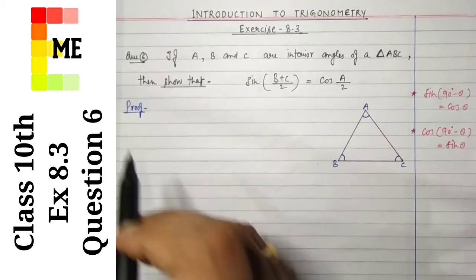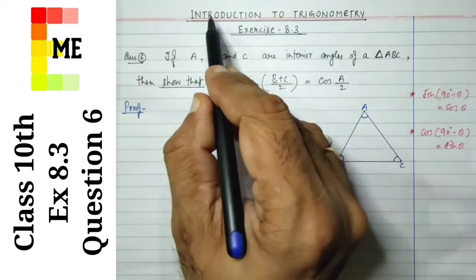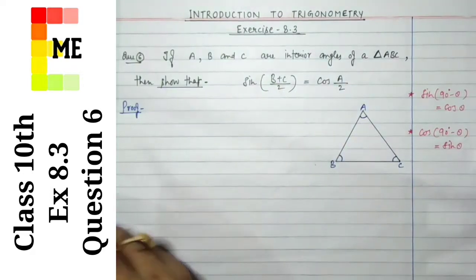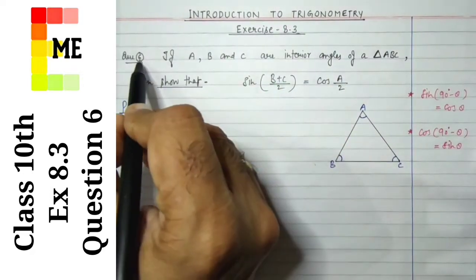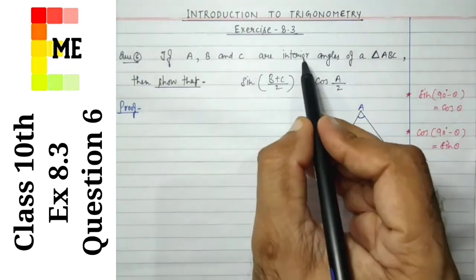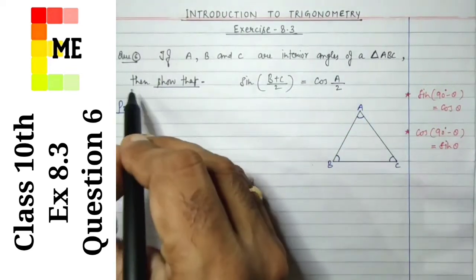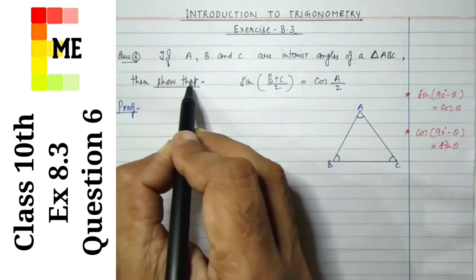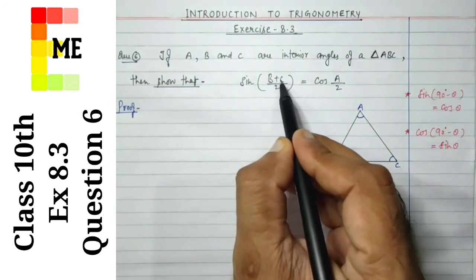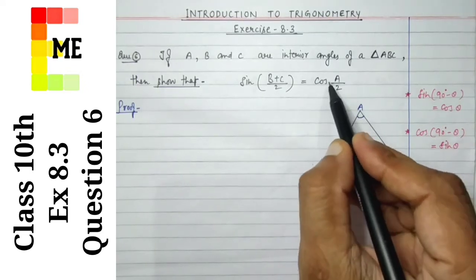Hello students, today we are going to do question number 6 of exercise 8.3 of the introduction to trigonometry chapter. Question number 6: if A, B and C are interior angles of a triangle ABC, then show that sine of angle B plus C by 2 is equal to cos of angle A by 2.